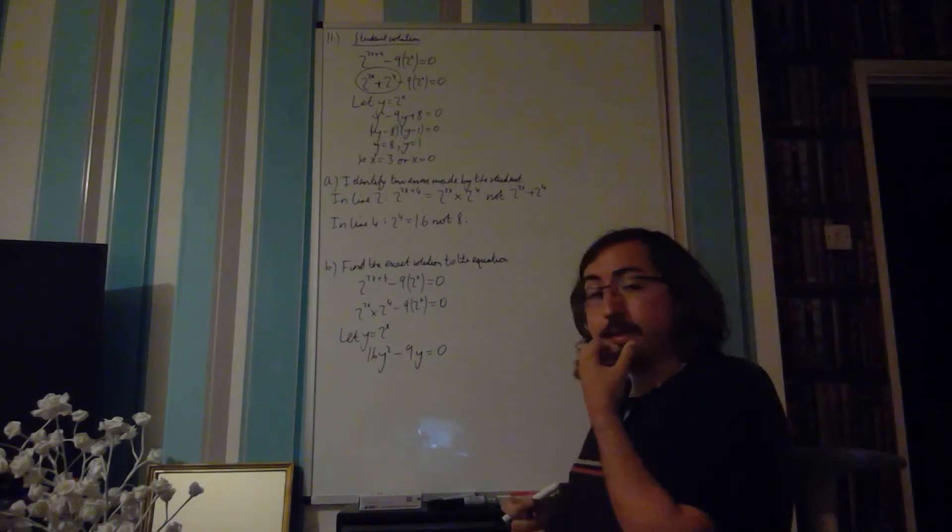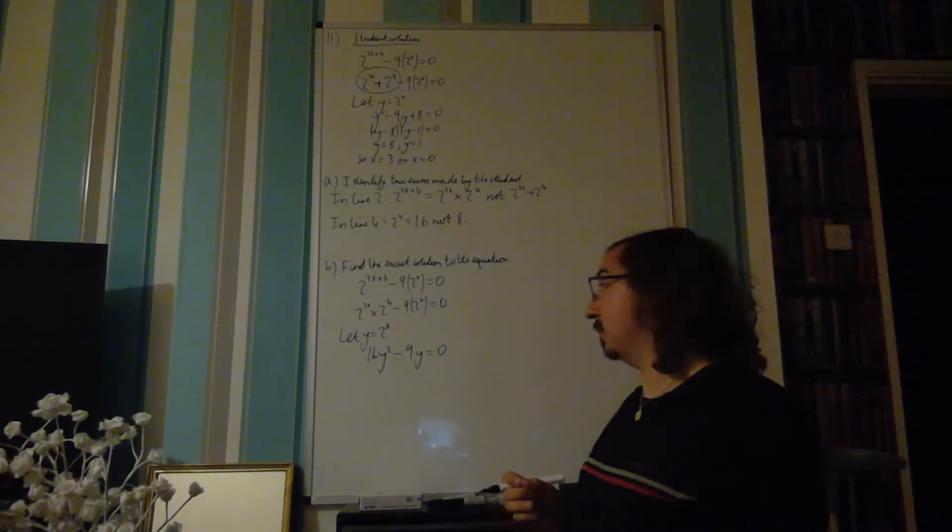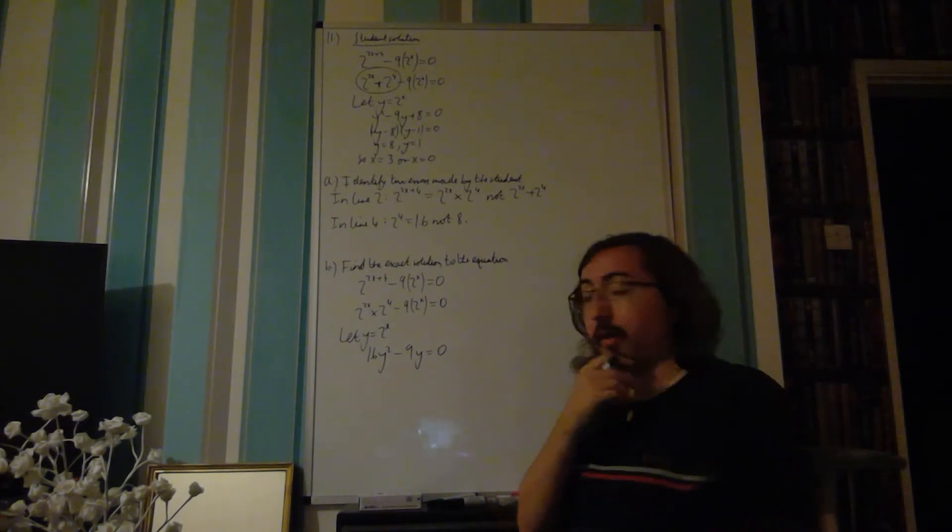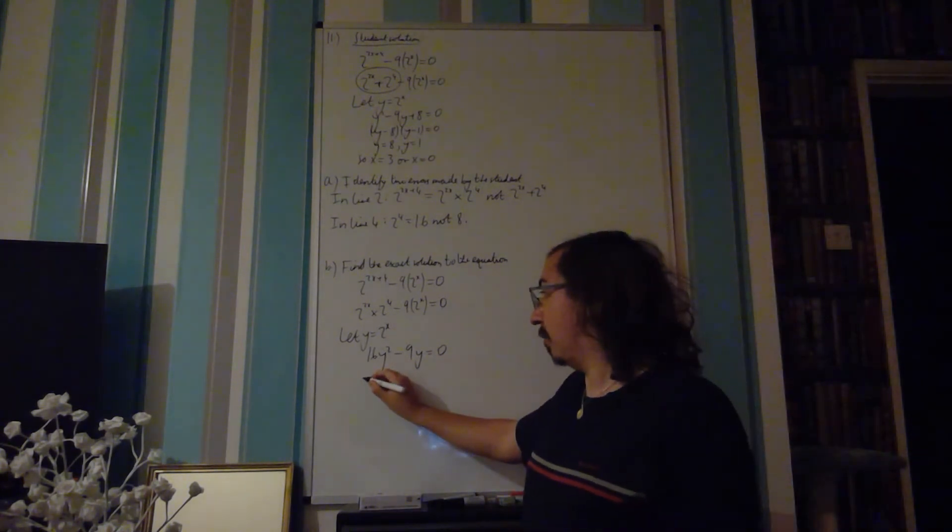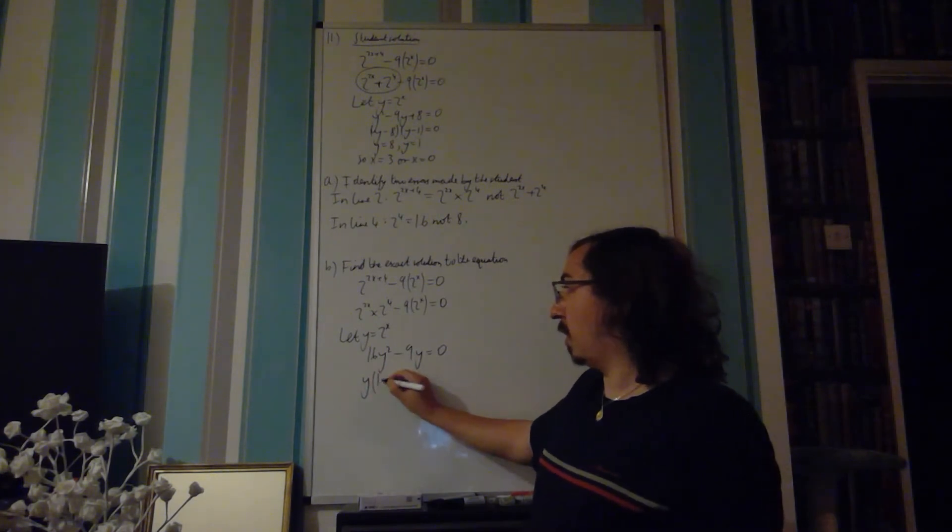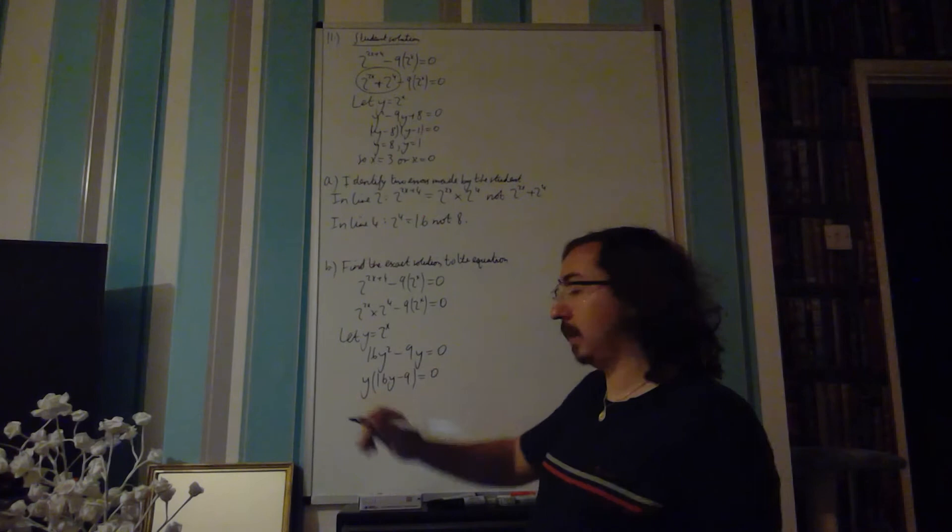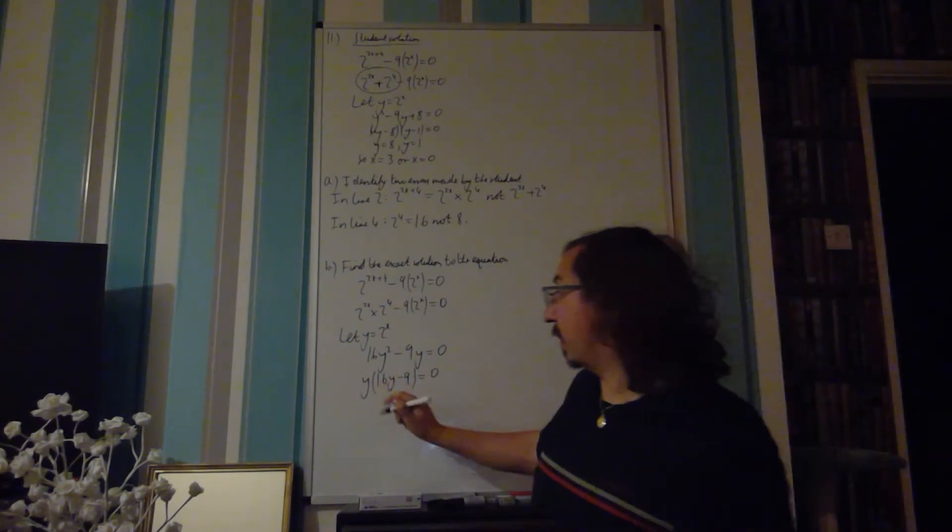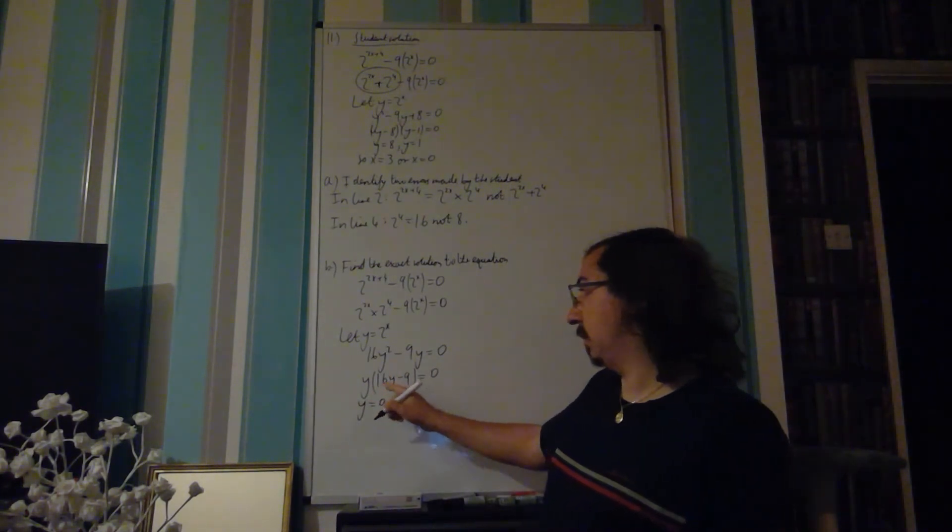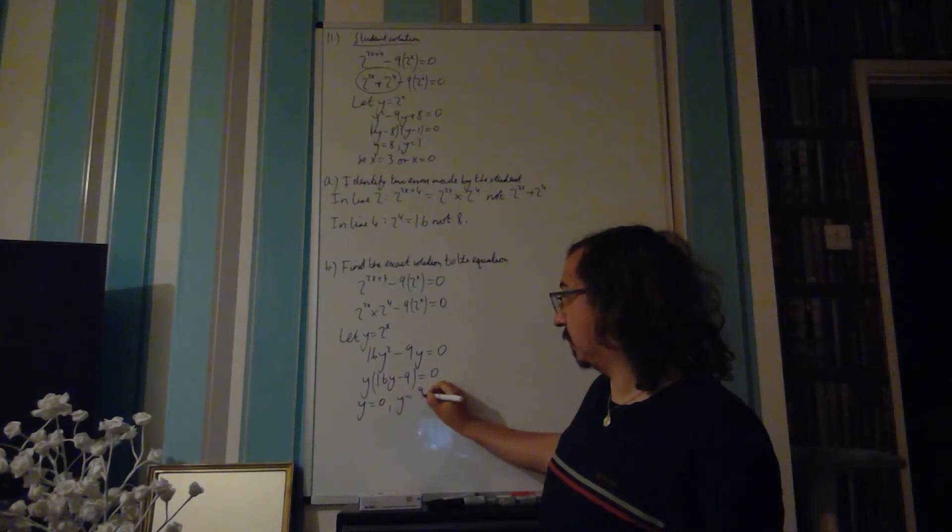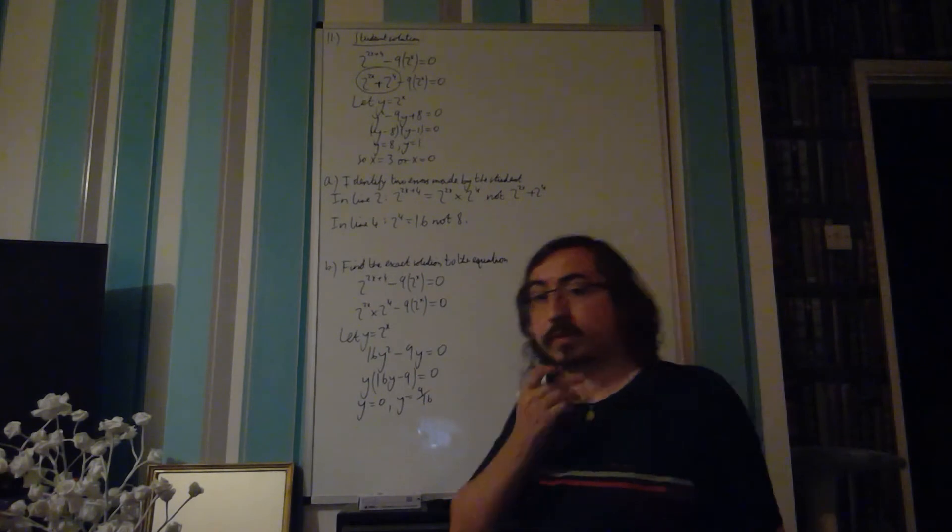We've got a quadratic. There's no third term, no constant there, so it's actually quite a simple quadratic. To solve it though, we've got to take out our common factor, and our common factor is y. So we've got y times 16y minus 9 is equal to 0, and therefore, y is equal to 0. 16y minus 9 is also equal to 0, so y is equal to 9 over 16.